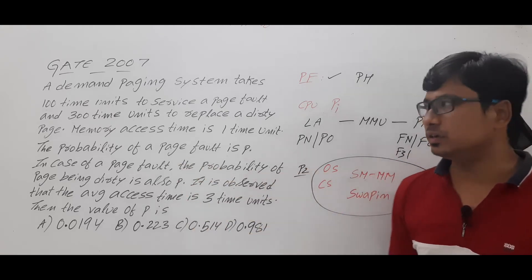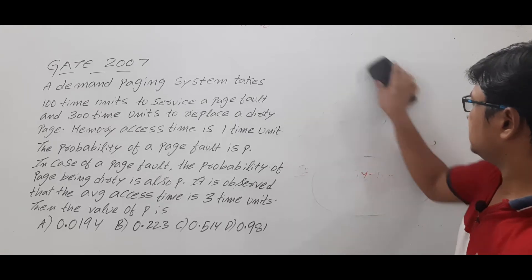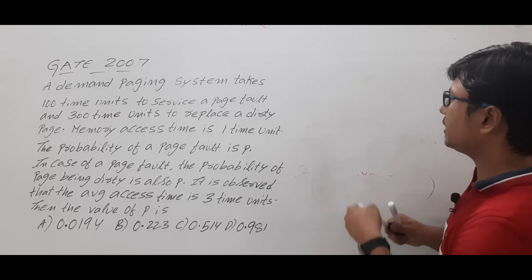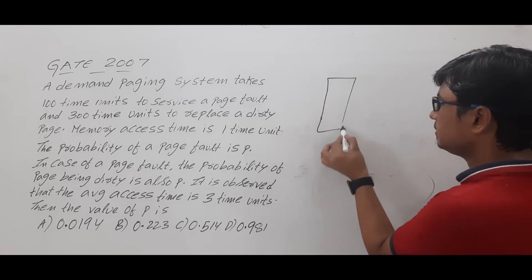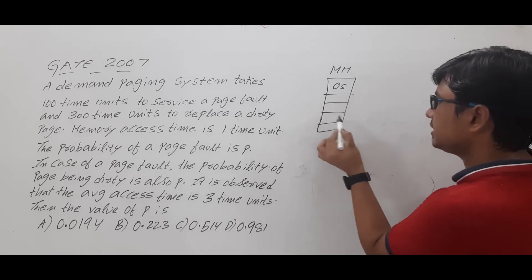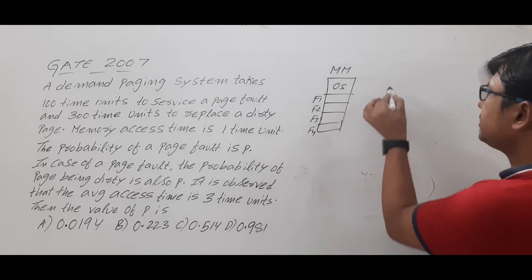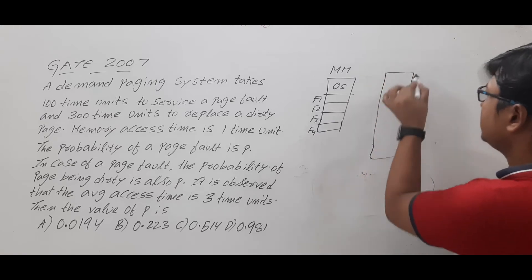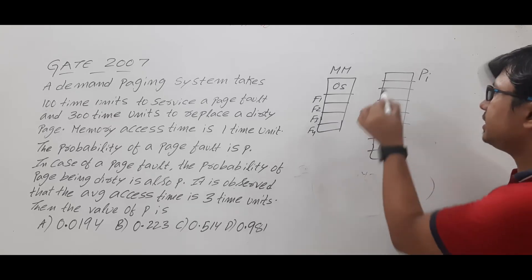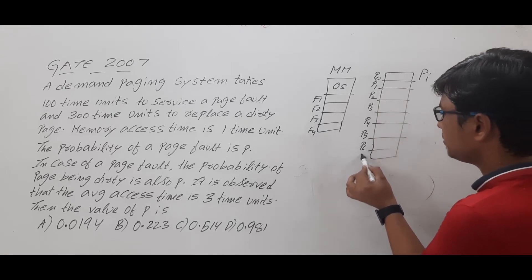Now let me discuss the dirty page concept. Main memory is logically divided into frames. Consider that frame 1, frame 2, frame 3, and frame 4 are available. There is a process PI which is logically divided into pages: page 0, page 2, page 3, page 4, page 5, page 6, page 7 — totally 7 pages. Remember that the page size equals the frame size.